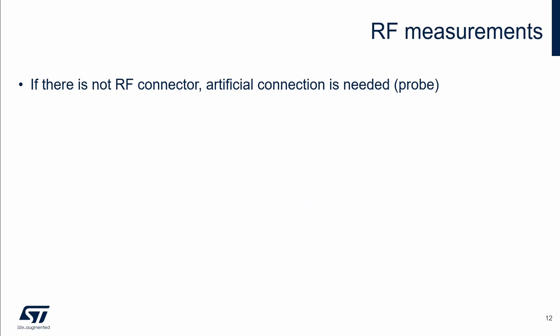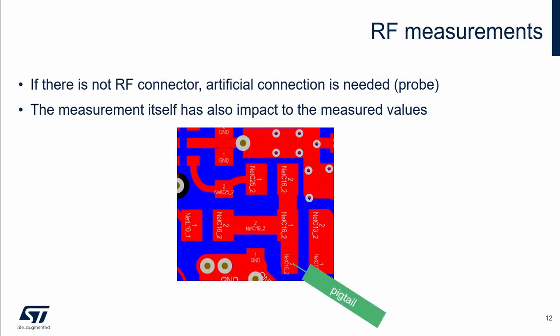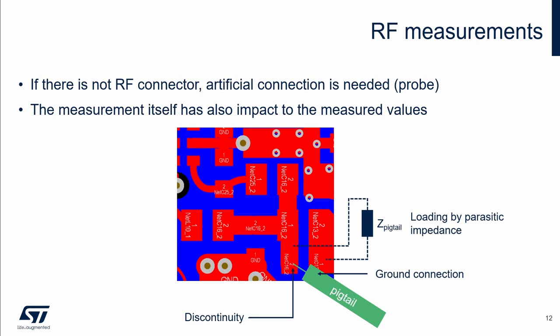To measure the matching network or filters, we need to connect a measuring instrument. If there is no dedicated RF connector, we have to use an artificial connection such as a semi-rigid cable, also known as a pigtail. The measurement itself also has an impact on the measured values, which we must take into account when evaluating results. The pigtail is not an ideal connection — there is discontinuity, and the ground connection has a big impact and should be as close as possible to the connection point. The pigtail loads the measured device with parasitic impedance, which can affect measured values. When measuring only one particular part of the board, some components may be removed — in this case, stubs may have an impact. The pigtail and measurement cables have some insertion loss, usually below 0.5 dB; in our measurement example, this loss is not compensated.